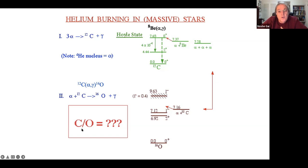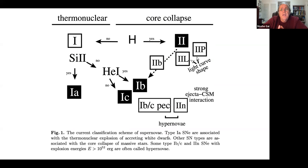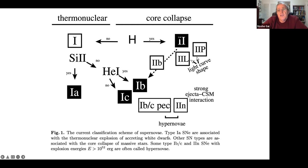In helium burning we create two elements - carbon and oxygen - but we don't know in what ratio. The carbon-to-oxygen ratio turns out to be of major importance in stellar evolution. At the end of a star's life, the star collapses and creates a supernova. In the old days we classified them: type 2 shows hydrogen in absorption lines; type 1 has no hydrogen; type 1A shows a silicon line.